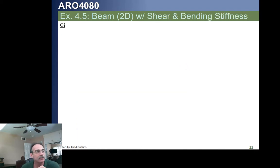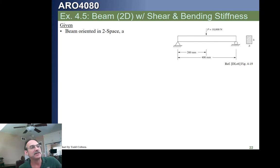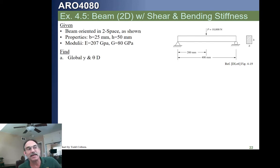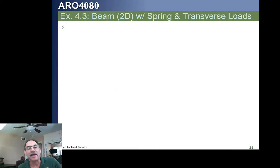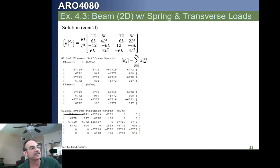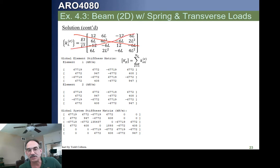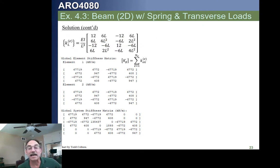Let's look at our next example. We have a simple beam where we're going to account for not only bending but also shear flexibility. We start by constructing our stiffness matrices. The standard bending-only local stiffness matrix is shown, but we're actually going to use the Timoshenko shear-inclusive stiffness matrix. We calculate the parameter phi (the shear flexibility parameter, not the rotation), then plug phi into the modified stiffness matrix to get our local stiffness matrices for elements 1 and 2. Then we assemble the global stiffness matrix.